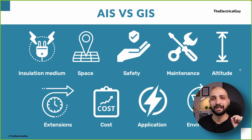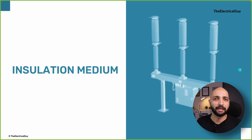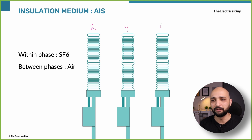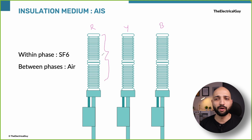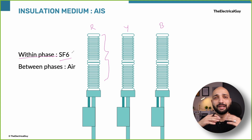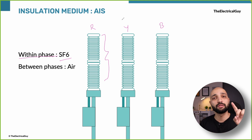Let us first start with the main difference, and that is the insulating medium. There are two concepts here: insulation within the phase, and insulation between the phases. So let's say this is our R phase of a circuit breaker — whatever insulation is provided inside this phase is what we call insulation within the phase. Generally it is provided by SF6 gas in high and extra high voltage switchgear, but it can also be vacuum or any other gas with insulating properties.